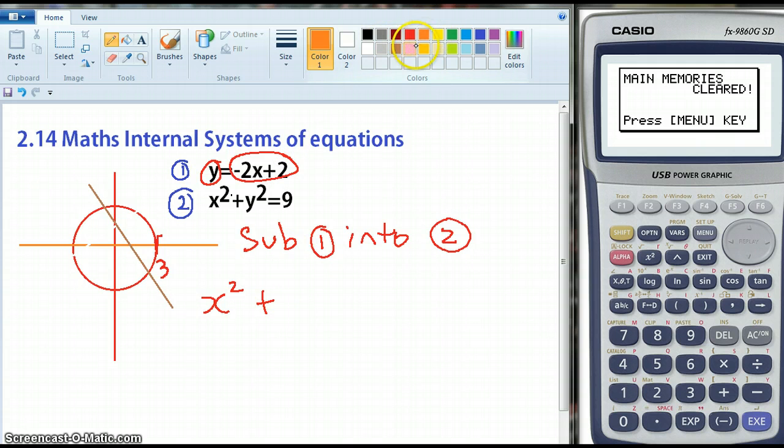So I'm going to have negative 2x plus 2. Now back into this equation, it's squared, so I need to square that. The brackets are important. Equals 9.